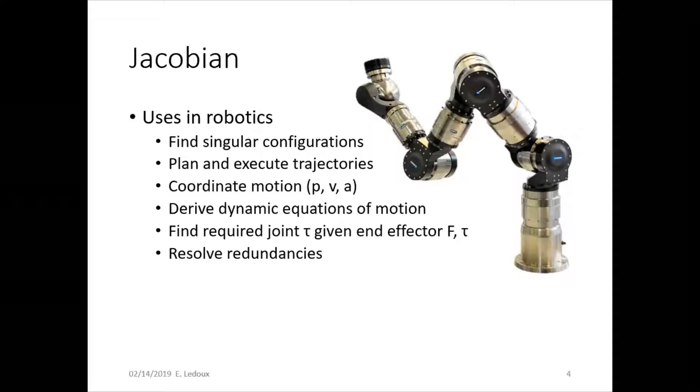Find required joint torque given end effector force and torque, so we know how strong of a motor do we need at each joint, and resolve redundancies, which is when the robot has more degrees of freedom, more joints than there are actual 3D space degrees of freedom.